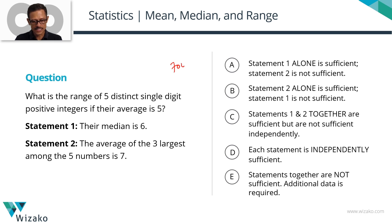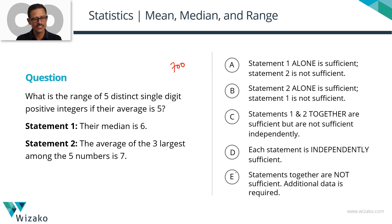This is a GMAT 700 level data-sufficiency question from the topic statistics. Concepts covered are mean, median, and range.